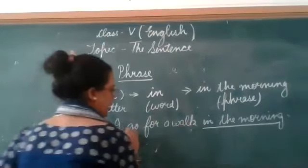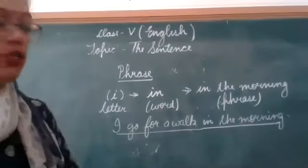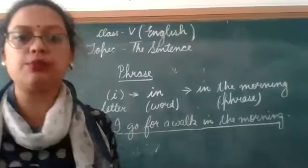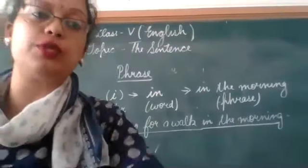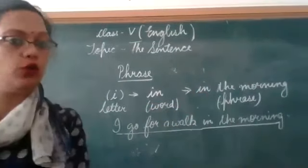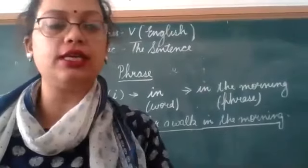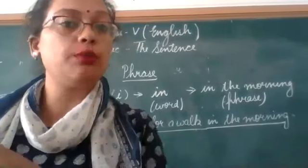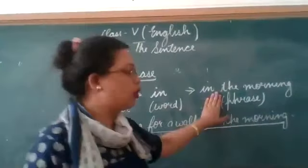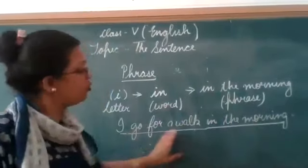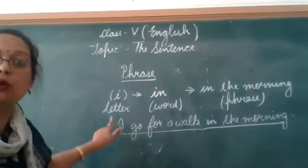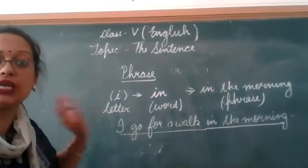Now I have said 'I go for a walk in the morning' — and now it has complete meaning, so now it has become a sentence. When I say 'I go for a walk in the morning,' you understand the whole information. But when I say 'in the morning,' you don't understand the whole information because it is not giving you complete information. So 'in the morning' is a phrase, and 'I go for a walk in the morning' is a sentence because it gives you complete meaning and makes proper sense.